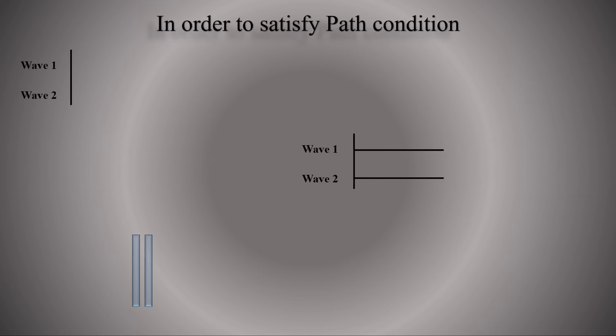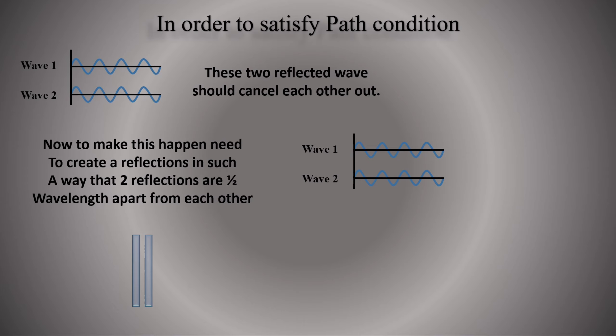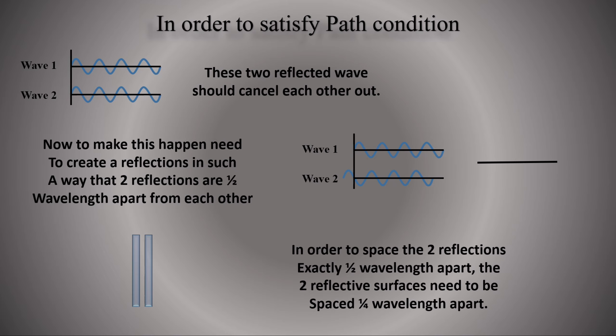To satisfy path condition, these two reflected waves should cancel each other. To make this happen, need to create reflections in such a way that two reflections are half wavelength apart from each other. When we shift one wave by one half, we get destructive interference as required. To achieve two wavelengths exactly half wavelength apart, the two reflective surfaces need to be spaced one-fourth wavelength apart and as a result we get this as the thickness of a coating.